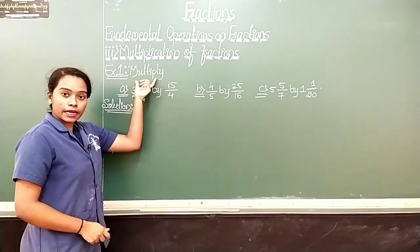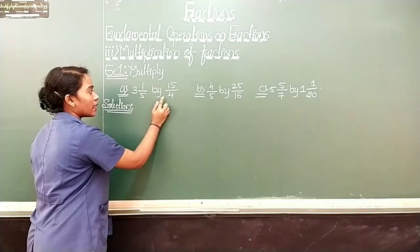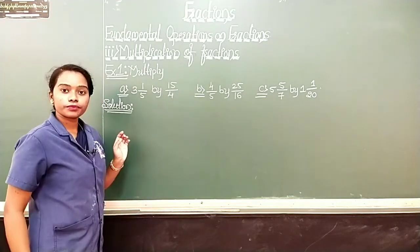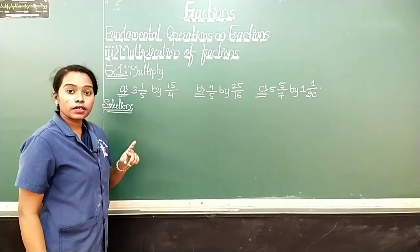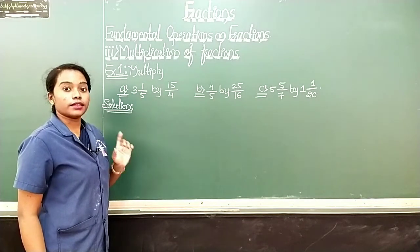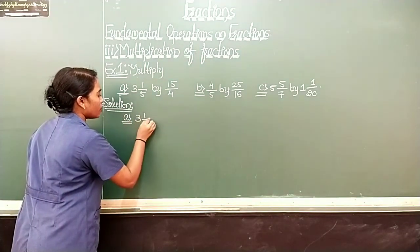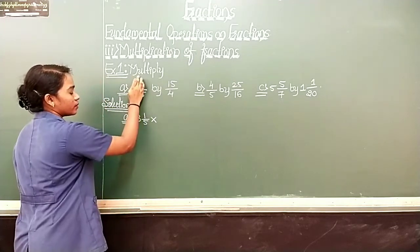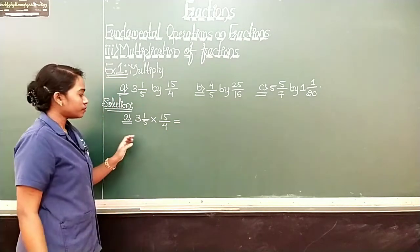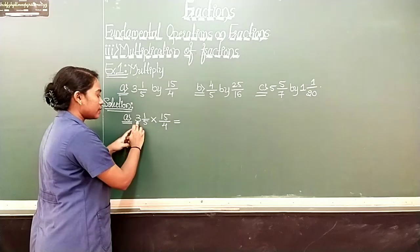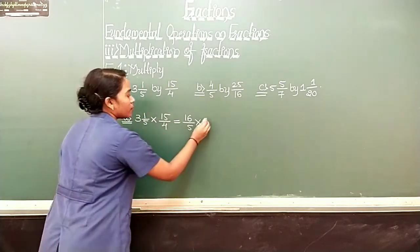We have to multiply. Take the first one: 3 1/5 × 15/4. See here, we have a mixed fraction. First, you have to convert it into an improper fraction, then multiply. Solve first one: 3 1/5. You have to multiply 15/4, which is equal to — now, 5 into 3 is 15, 15 plus 1 is 16 by 5, into 15 by 4.